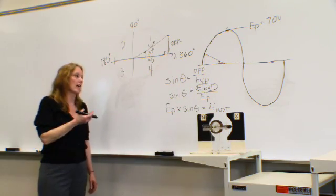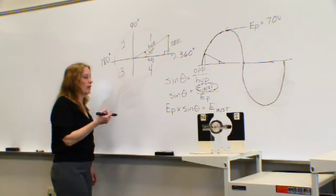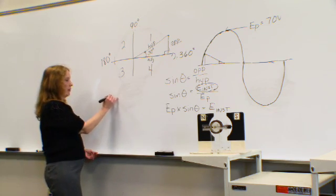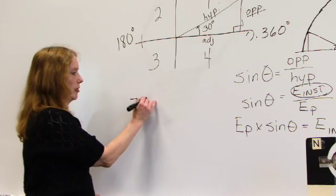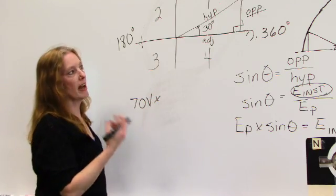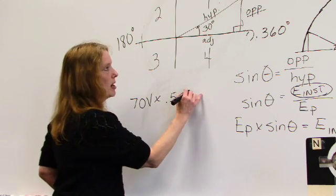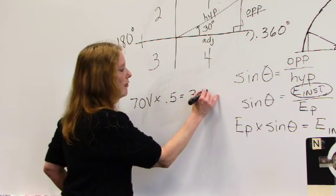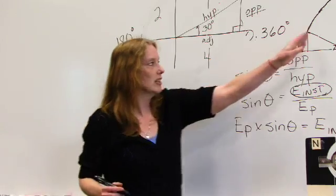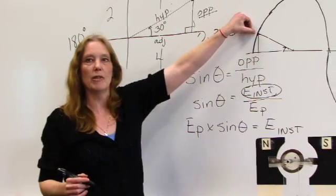We know that our sine of 30 degrees is 0.5. So taking that information, I can take 70 volts times the sine of theta, which is 0.5. And I am able to come up with 35 volts instantaneous at this particular point in my sine wave.